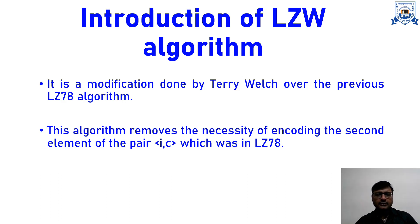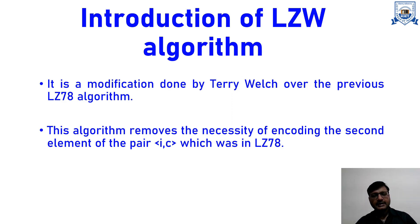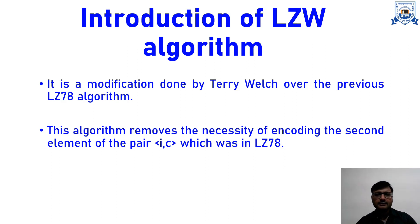In LZ78, during encoding we used to send a doublet having two things: the index of the dictionary and the code. In this LZW modification, we need to send only one thing — that is the index of the dictionary. In LZ77 we sent a triplet, then in LZ78 a doublet, and here we send only a single value which is the index of the dictionary. We will see that with an example.